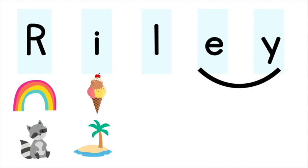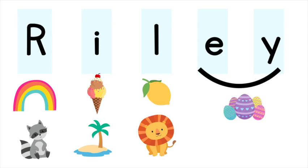So for R we have rainbow, raccoon. For I we have ice cream and island because her name makes the long I sound. For L we have lemon and lion. And for E we have easter eggs and someone eating.